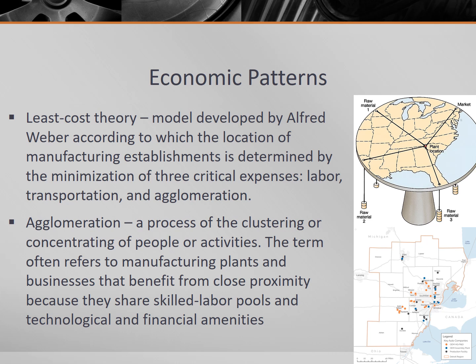We looked at the primary sector location theory last year when we talked about von Thunen's model of agricultural land use. The secondary sector's location theory, or the theory about where factories choose to locate, is called the least cost theory, which is a model developed by Alfred Weber, according to which the location of manufacturing establishments is determined by the minimization of three critical expenses: labor, transportation, and agglomeration.